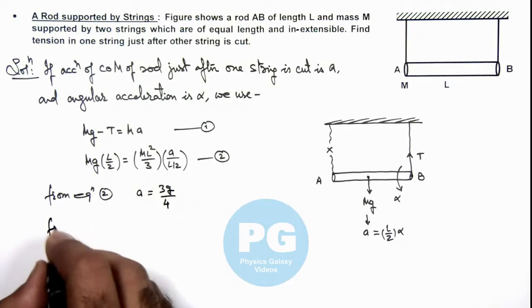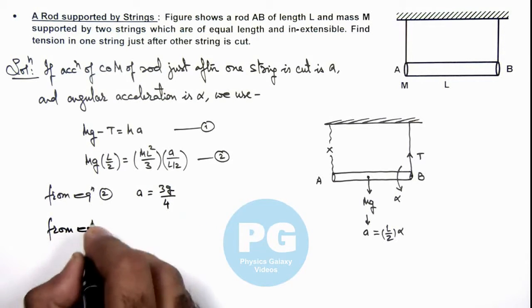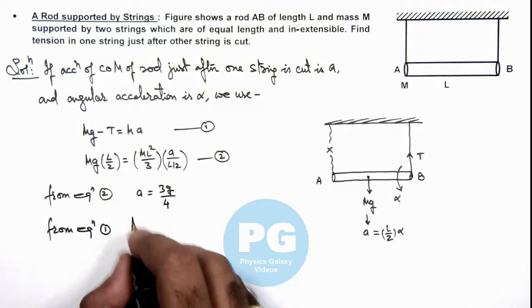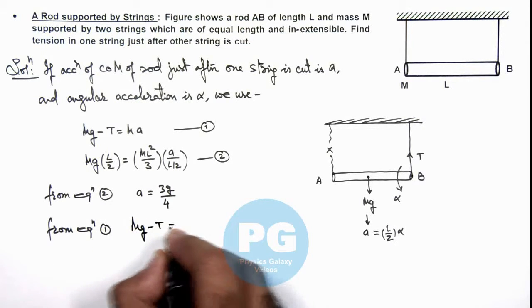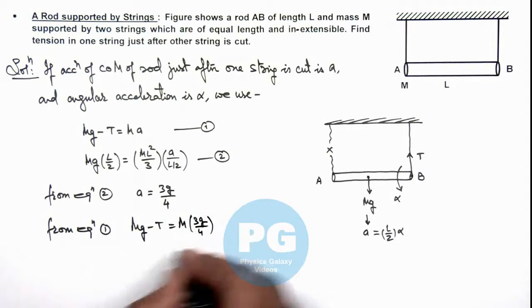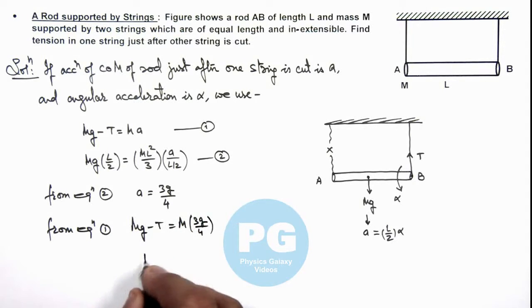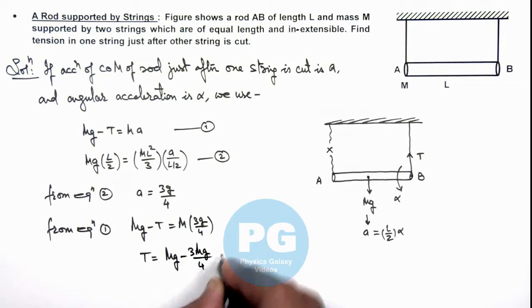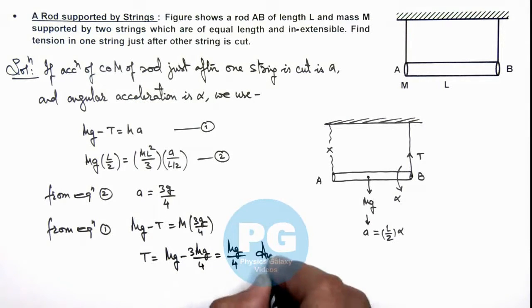Now from equation 1, we can write: mg minus T is equal to m multiplied by 3g/4. And simplifying this gives us the value of T, that is mg minus 3mg/4, that is equal to mg/4. That is the result of this problem.